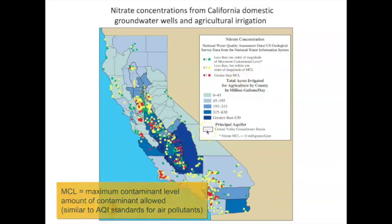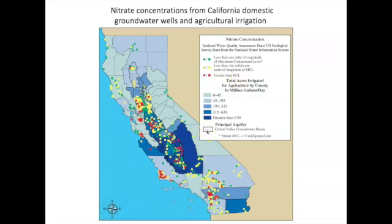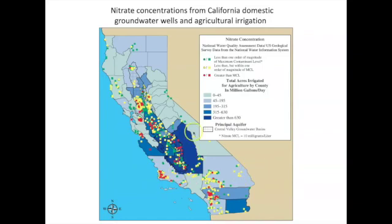A low maximum contaminant level number means the substance is highly toxic; a high number is less toxic. The red areas indicate water contamination. In Santa Monica, this spur of California, there has been contamination above the maximum contaminant level in local water sources. Our water comes from the Colorado River to the east and from the Hetch Hetchy Reservoir to the north — those sources are clean, but agriculture in the middle of the state and even local farming has caused some water pollution.